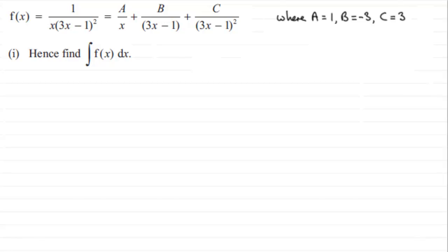Well I've done that for you here. So the integral of f(x) with respect to x is equal to the integral of 1 over x. Notice here where B was minus 3, I've just taken the minus out the front of the integral, so we've got the integral of 3 over (3x minus 1), and finally plus the integral of 3 over (3x minus 1) all squared.